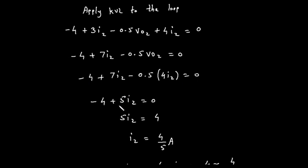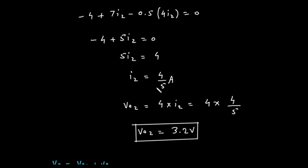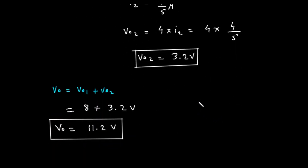Simplifying the last term, 0.5 times 4 is 2. The equation becomes: minus 4, plus 7 times I2, minus 2 times I2, equals 0. Combining the I2 terms, we get minus 4 plus 5 times I2 equals 0. Solving, I2 equals 4 divided by 5, or 0.8 amps. Now we can find V02, which is 4 times I2: V02 equals 4 times 4/5, which is 16/5, or 3.2 volts. The contribution from the 2-amp source is 3.2 volts.